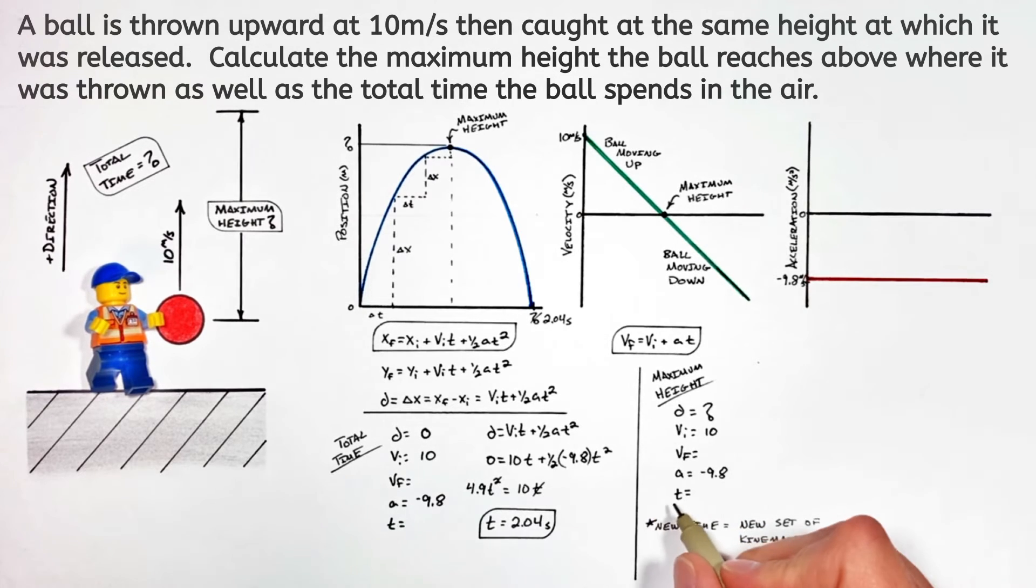I want to caution you here. Some of you may recognize that this ball is going to reach its maximum height at half of the total time, and it's tempting to plug that value of 1.02 seconds in to the time for solving for the maximum height. But realize that time is half the total time only if the ball is caught at the same height from which it was thrown.